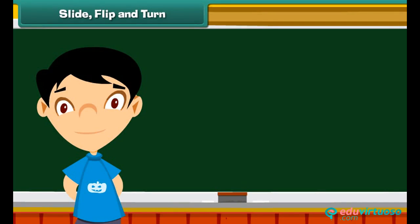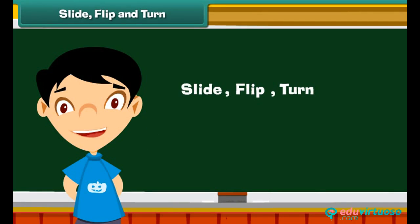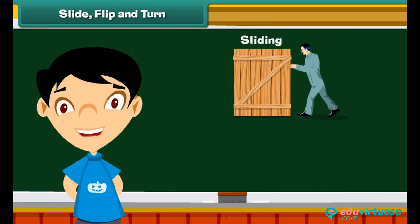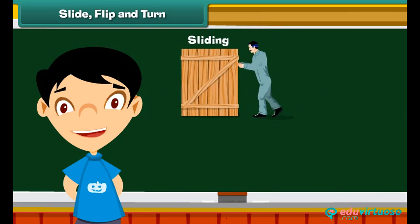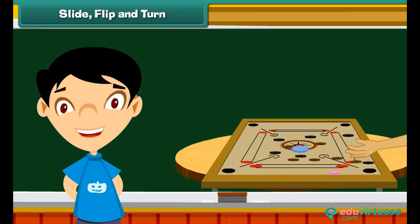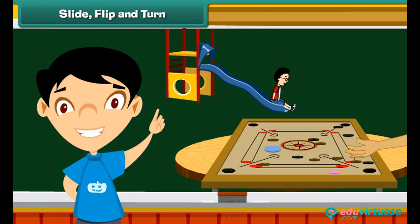Slide, flip, and turn: Moving an object smoothly along a surface without disturbing its shape and size is sliding. We observe sliding in real life — while playing carrom, we move the carrom coins by hitting them with the striker. Children also enjoy themselves on slides.